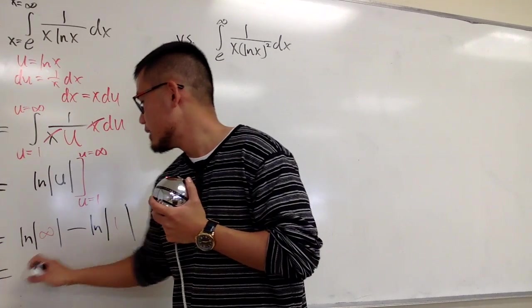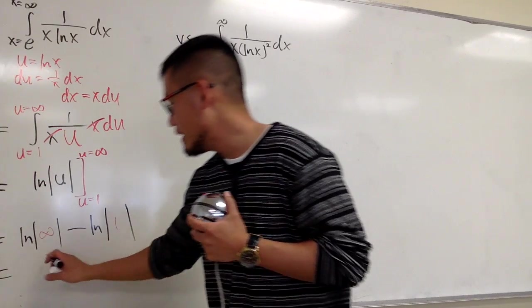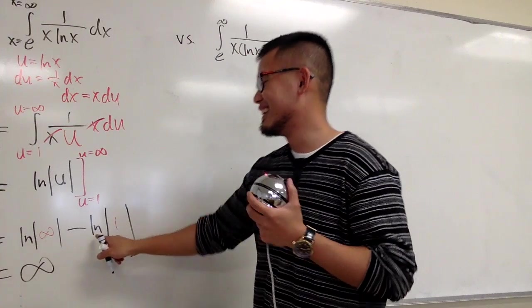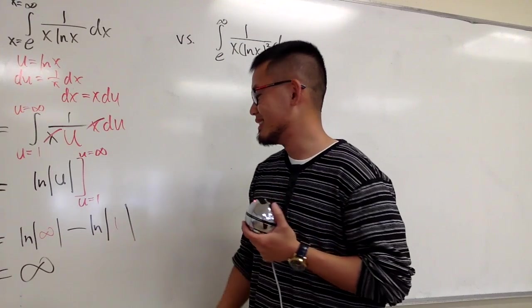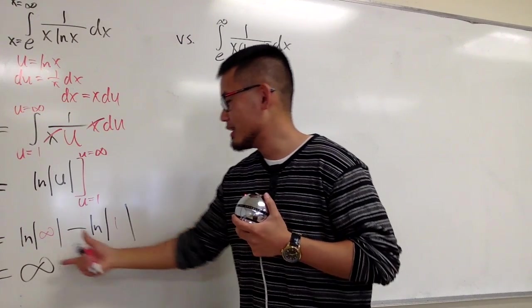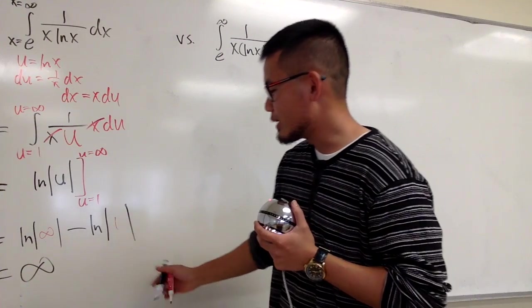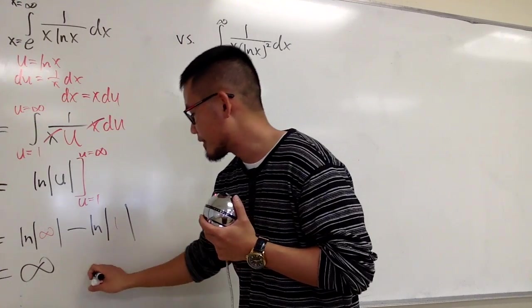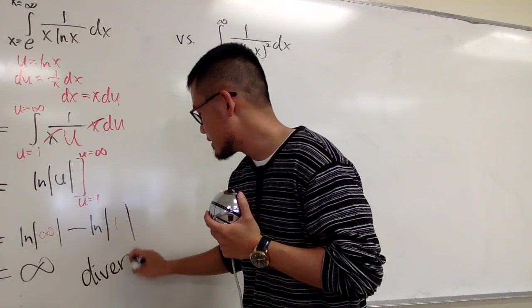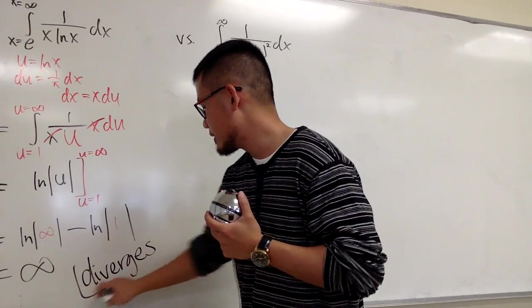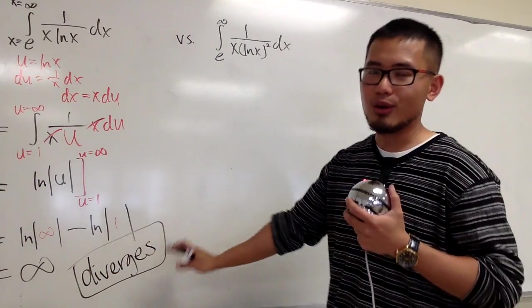What is ln of infinity? It is infinity. 1 in the ln is 0. So this is just infinity. In other words, this integral diverges. And done deal. That's it.